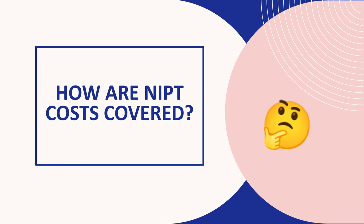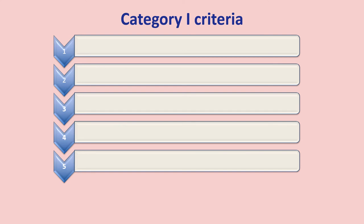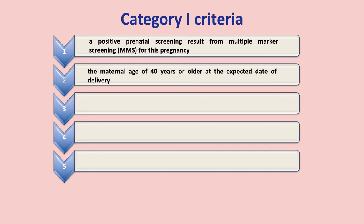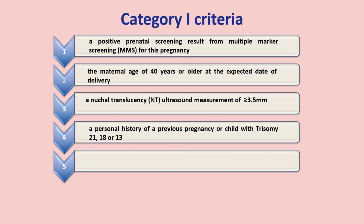If you're a resident of Ontario, NIPT is available to all pregnant individuals, but will only be covered by the Ontario Health Insurance Plan, or OHIP, if one of the following criteria are met. Category 1 criteria can be ordered by any physician or nurse practitioner: a positive prenatal screening result from multiple marker screening (MMS) for this pregnancy; maternal age of 40 years or older at the expected date of delivery (in the context of IVF, guided by age at egg retrieval); a nuchal translucency ultrasound measurement of at least 3.5 mm; a personal history of a previous pregnancy or child with Trisomy 21, 18, or 13; or an ongoing twin pregnancy.